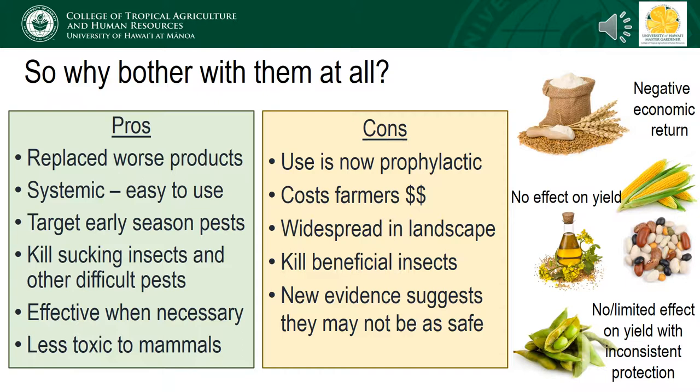Much of what we know now regarding neonic impacts to bees was information generated well after these pesticides were registered. But if they are so harmful to beneficial insects like pollinators, why bother with them at all? It's always a balance, because there are benefits to these insecticides. When they were first introduced, they replaced a number of even more toxic compounds to which pests had developed resistance. Being systemic and often coating seeds before they're planted means they are really easy to use, and since crops take up the pesticide when they're still young, it confers protection against early season pests. They are also less toxic to mammals in comparison to older products.